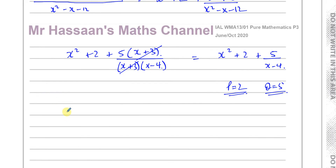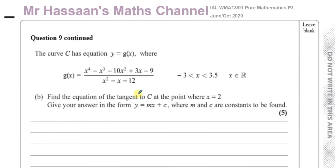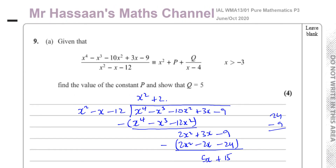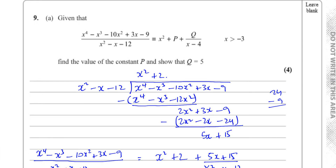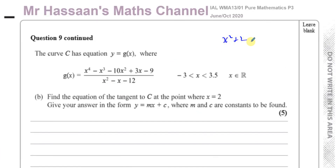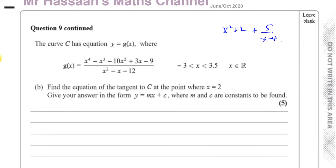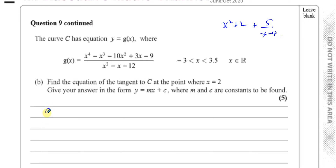So that algebraic long division made that very simple. Now the next part of the question — that's a 2 and that's a 5. Find the equation of the tangent to the curve at the point where x equals 2. So we just worked out that you've got x squared plus 2 plus 5 over x minus 4. They're asking us to find the equation of the tangent to c.